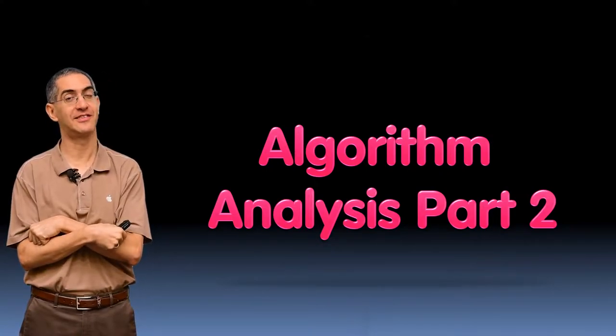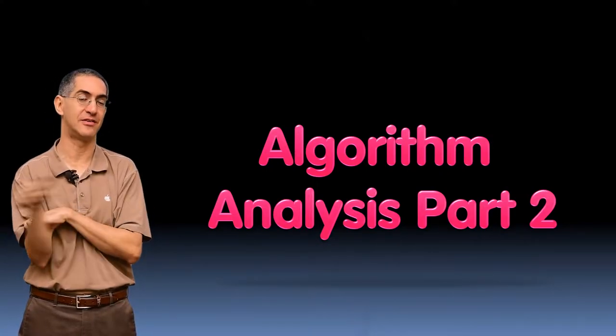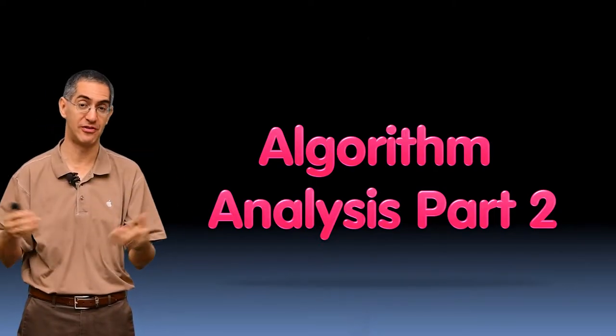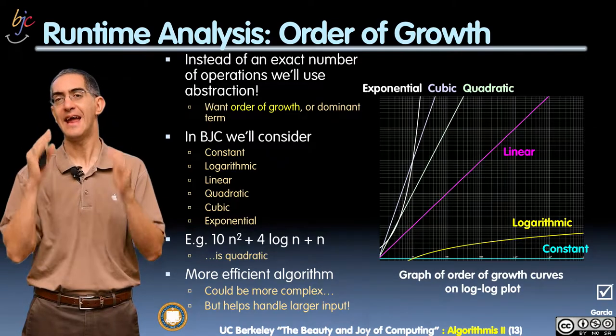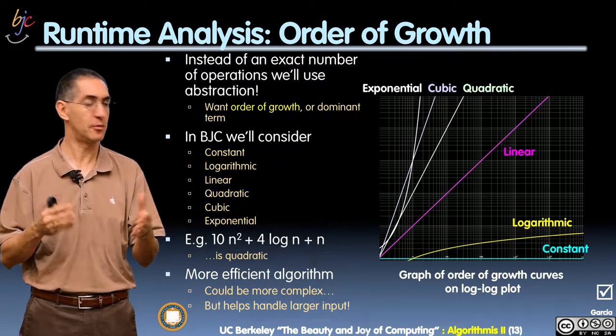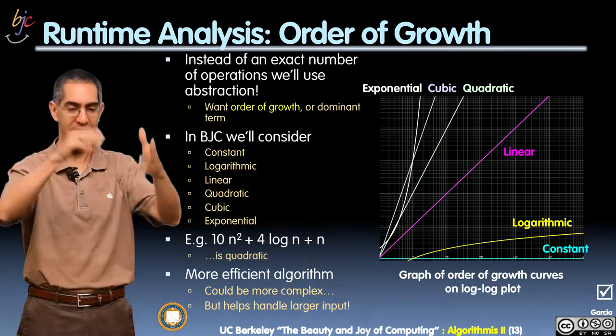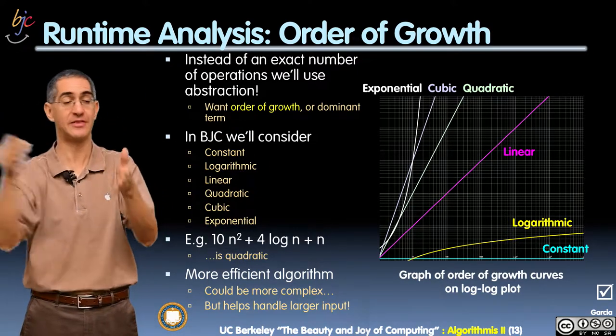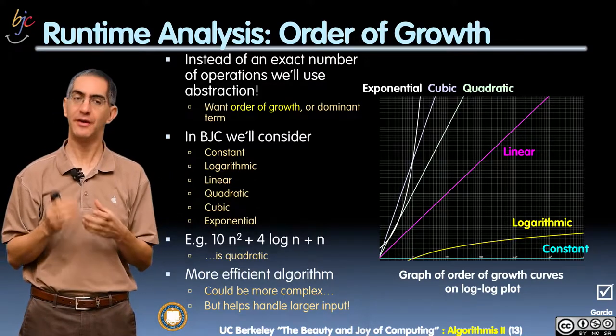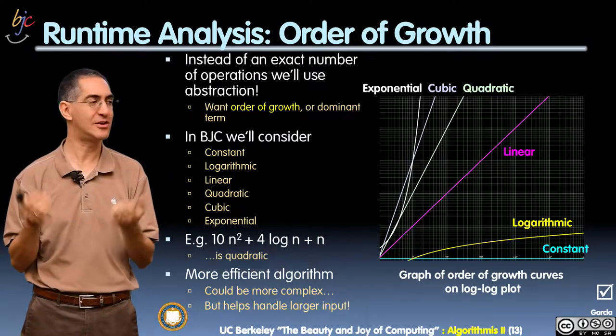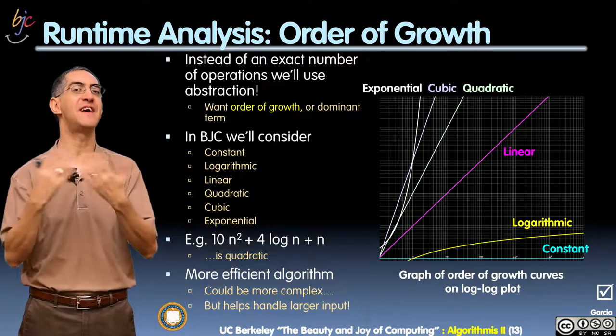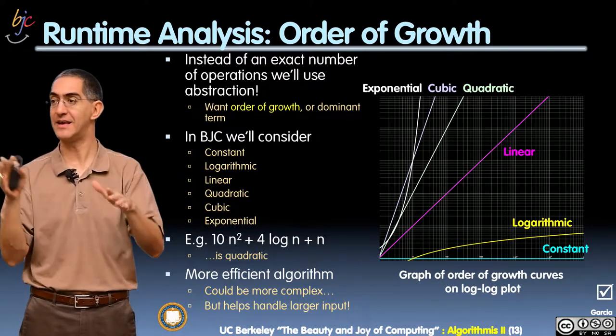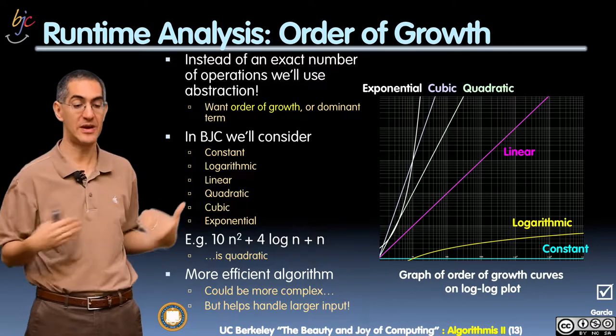So now, this is the hardest slide so far we've seen in this series of algorithm complexity. We're getting a little mathematical because we're doing this formally. Instead of the exact number of steps, remember it's a function of n, a function of the input size. We don't care about an exact formula. We actually use abstraction. I care about a family of formulas. So we're going to categorize all the possible runtimes into what we do in BJC.